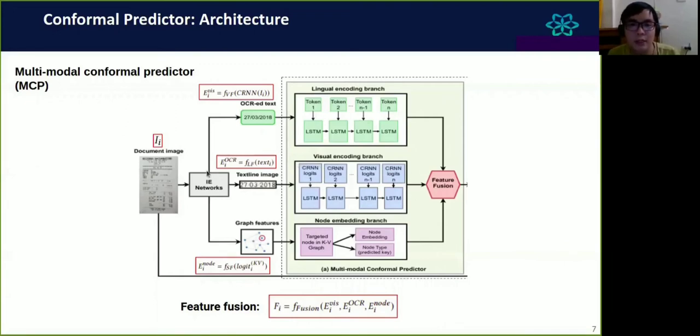For the visual encoding branch, the input will be the CNN logit captured from the OCR model, and the output is also a vector of the same size. Basically, this vector will have knowledge about the specific text line image. For the graph embedding branch, the input will be the hidden layer, the last layer representation from the graph convolution neural network. The output is also a vector of the same size as previous branches. After that, we have three output vectors corresponding to three encoding branches. We want to fuse these vectors into the final one, the final output for the multi-modal conformal predictor. We use the feature fusion module to fuse different kinds of signals. In the simple form of fusion, we use concatenation, where we simply concatenate three input vectors into the output vector. For advanced techniques for feature fusion, we will discuss in the next slide.